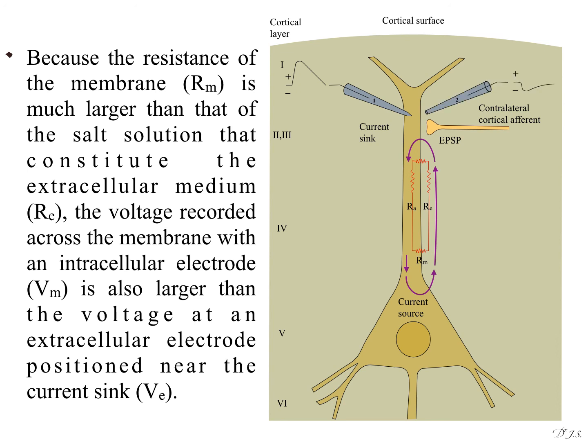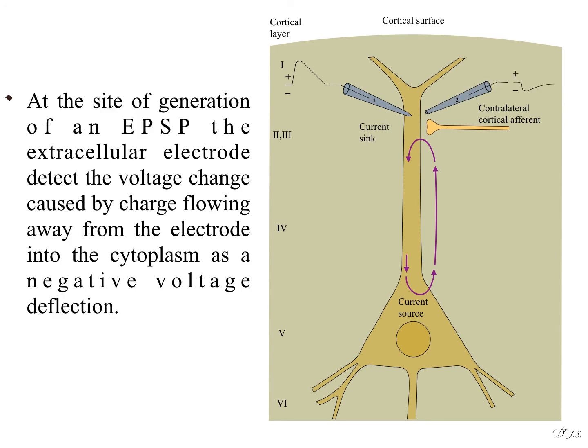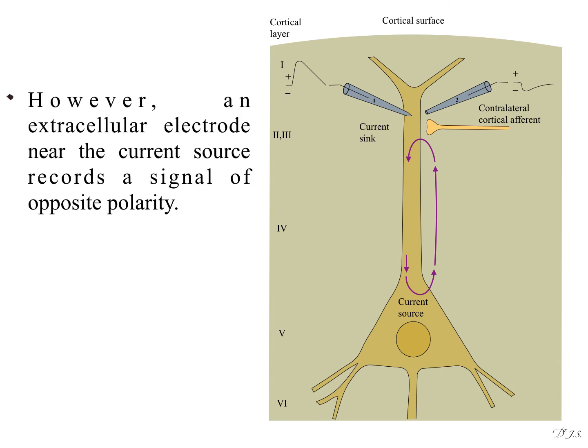At the site of generation of an EPSP, the extracellular electrode detects the voltage change caused by charge flowing away from the electrode into the cytoplasm as a negative voltage deflection. However, an extracellular electrode near the current source records a signal of opposite polarity.